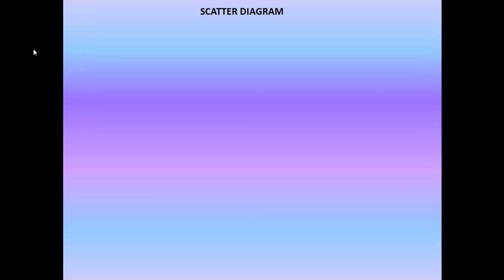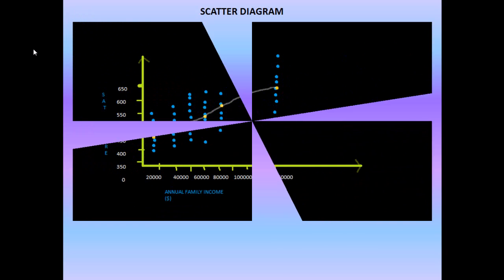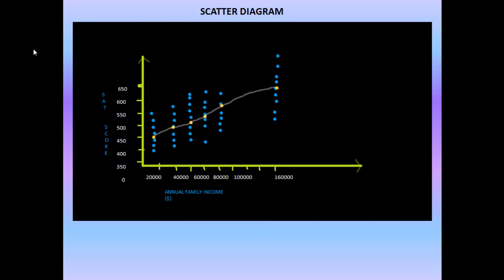We will start by plotting a scatter diagram. Notice that the x axis gives the independent variable. For each level of annual family income, different students would be having different SAT scores. The yellow points are depicting the mean SAT scores. We draw a curve joining the mean points. The points connected with the line are the mean values of each income level. So yellow dots depict the average score per income level.